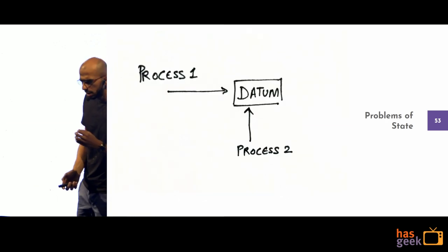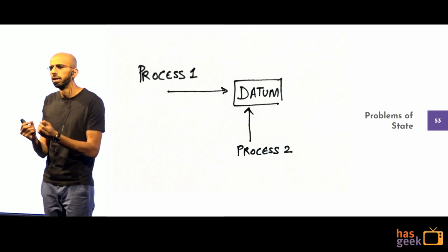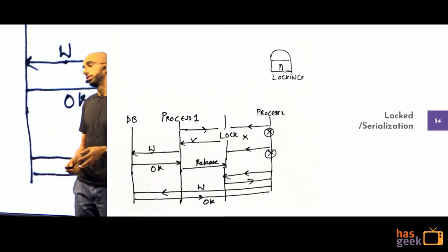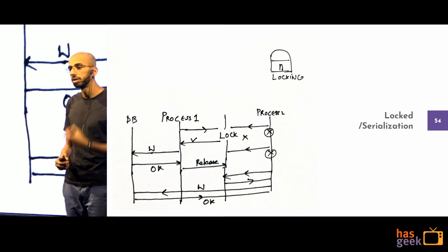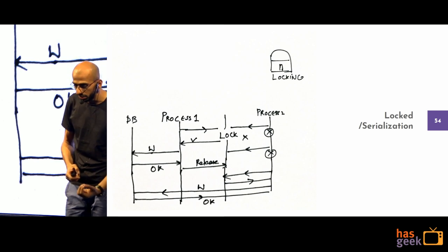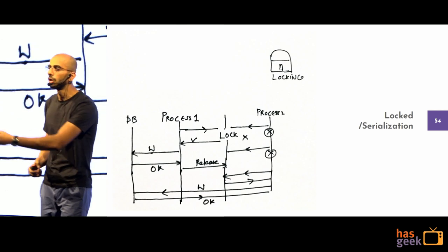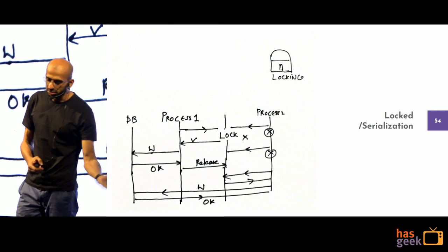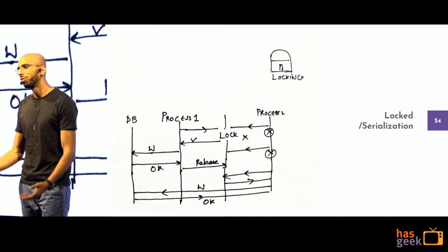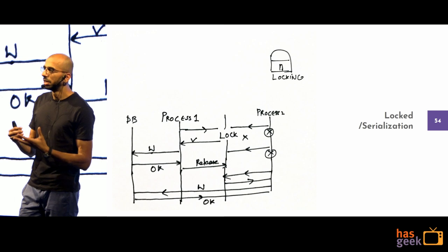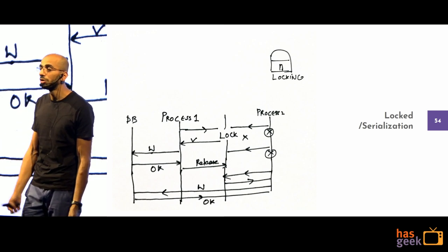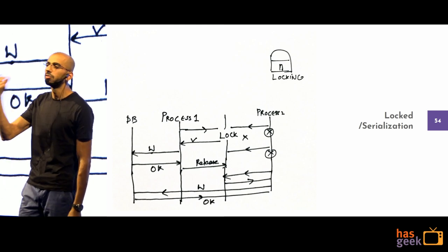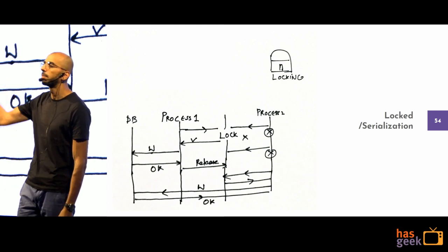With multiple processes accessing the same database entity, you need locking and serialization. One process acquires the lock, the other waits — it gets starved. Once the first releases the lock, the second proceeds. But how long do you acquire the lock for? How do you tell the other process that its lock has expired and it shouldn't retry? Atomic operations are essential — the next time a process wakes up and tries to act again, operations must be atomic.